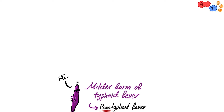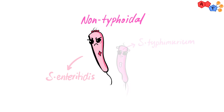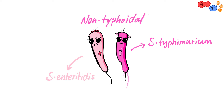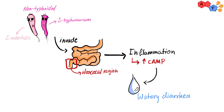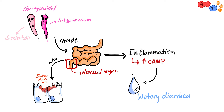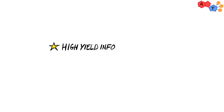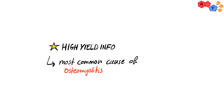Now let's move on to the non-typhoidal type. There are two common non-typhoidal species: S. enteritidis and S. typhimurium. These species invade the ileocecal region, and after the invasion they will cause an inflammatory response by the immune system, which will be associated with an increase in cyclic AMP. This will cause watery diarrhea first, but these species can also cause shallow ulcers, which will eventually lead to bloody diarrhea. Notably, Salmonella is considered the most common cause of osteomyelitis in sickle cell disease patients — not the trait.